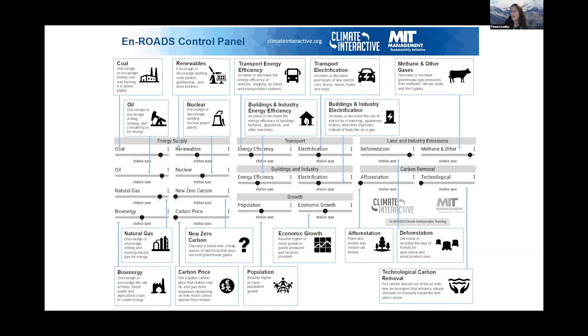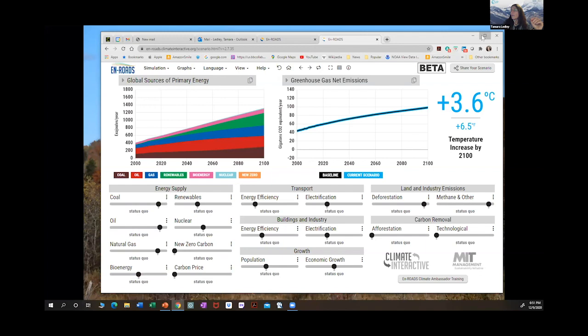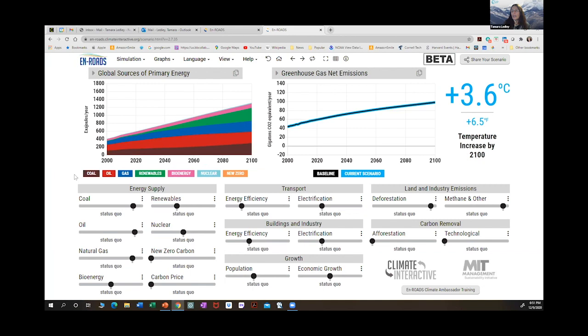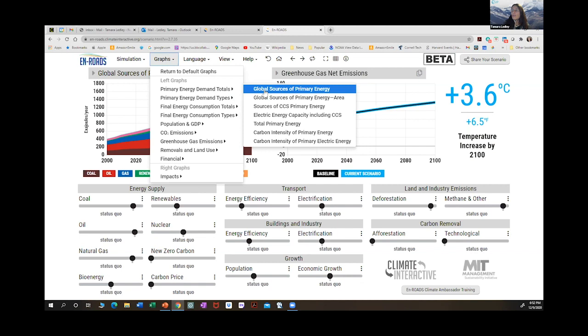Now we're going to go to the En-ROADS model. I want you to think about what actions you think you can make to help mitigate climate change. An important point: this is a global model, so every solution we implement assumes the whole world does the same thing. It's not just a particular city or country — the calculations assume everybody in the world is making that change.